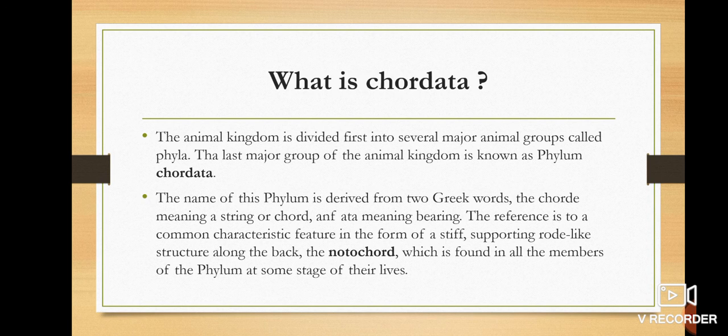The name of this phylum is derived from two Greek words. 'Chordi' means chord, and the other means bearing. So this means that these animals which are chord-bearing are called Chordates. The reference is to a common characteristic feature — a rod-like structure present in the back, which is a notochord.